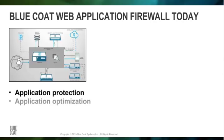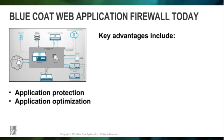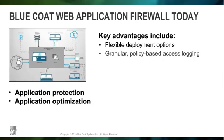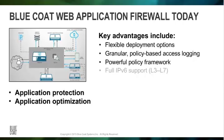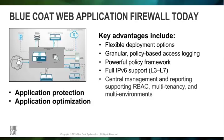Application optimization features include server SSL offloading and object caching, HTTP compression, URL rewriting, and server load balancing. Key advantages of the Bluecoat WAF solution include flexible deployment options, granular policy-based access logging, a powerful policy framework, full IPv6 support layer 3 through layer 7, central management and reporting, and support for role-based access control, multi-tenancy, and multi-environments.